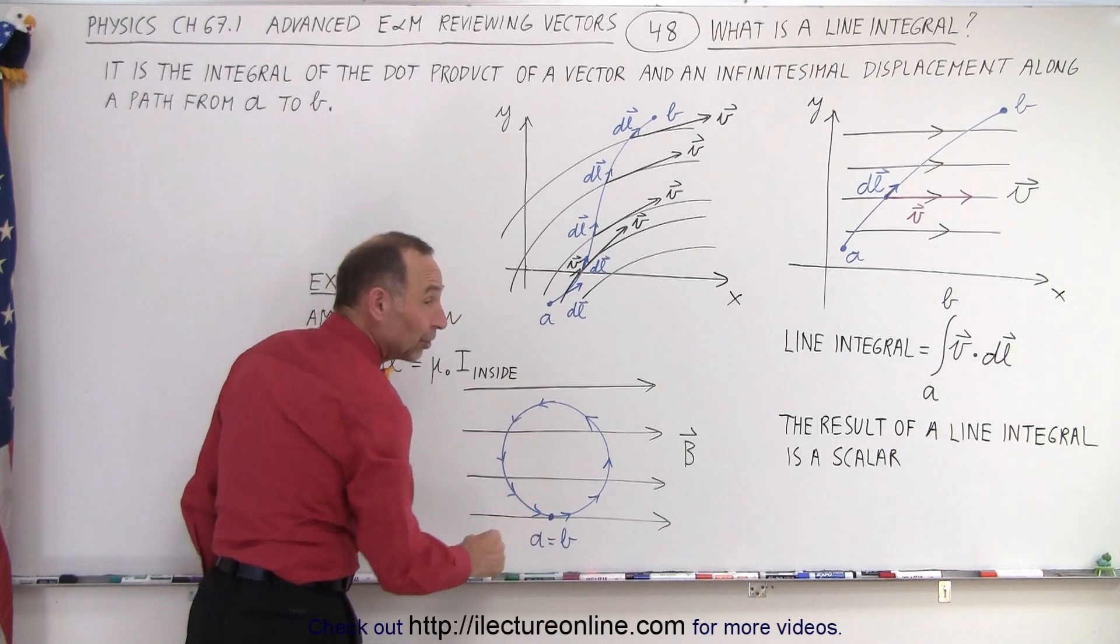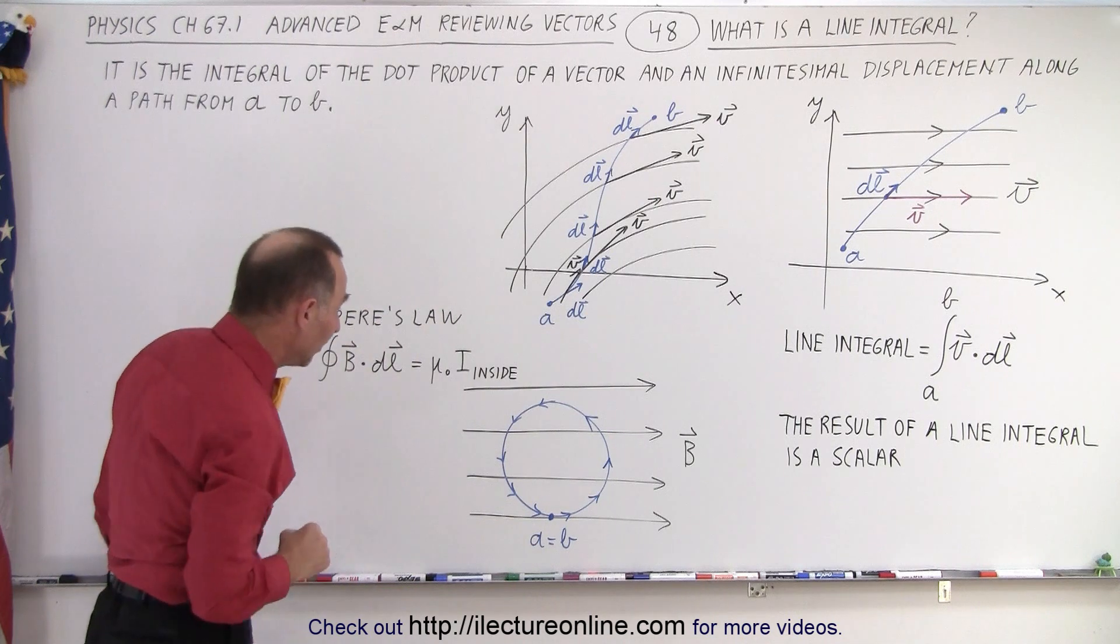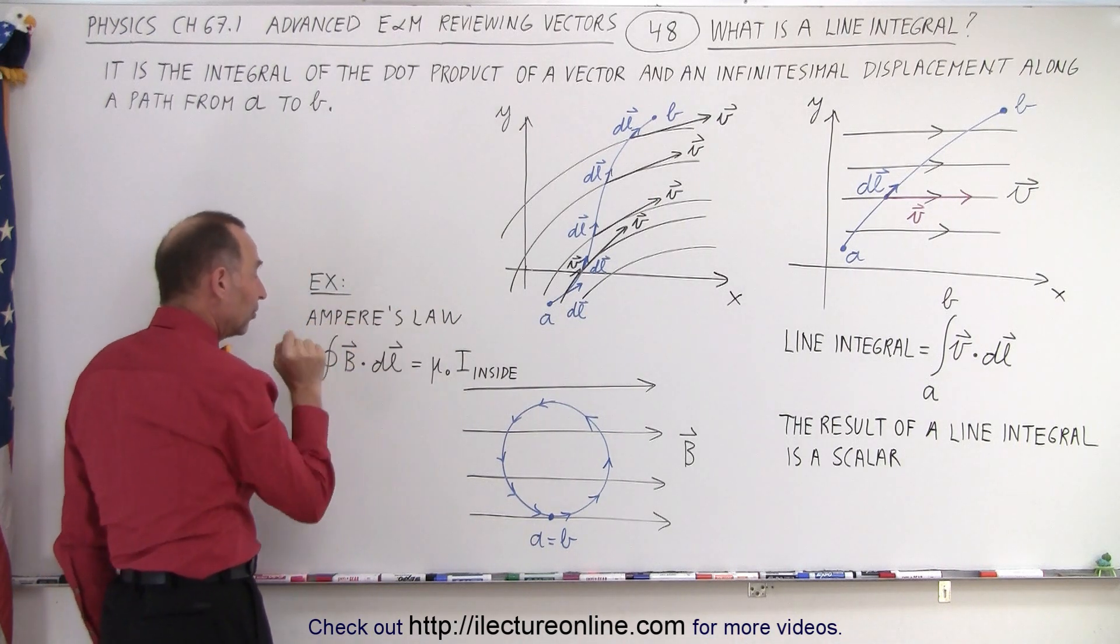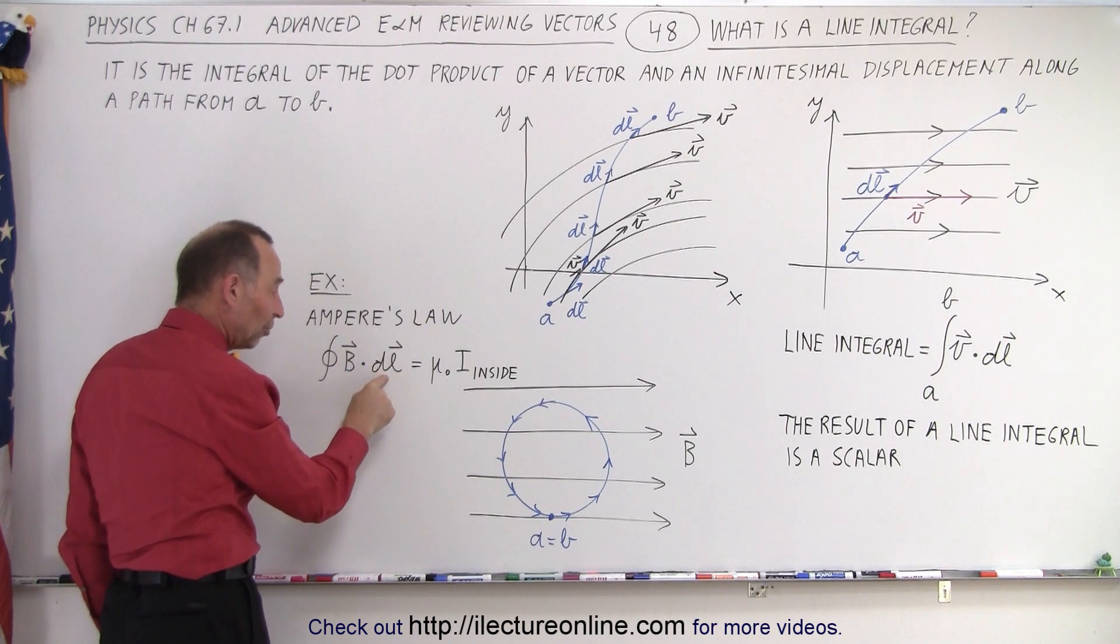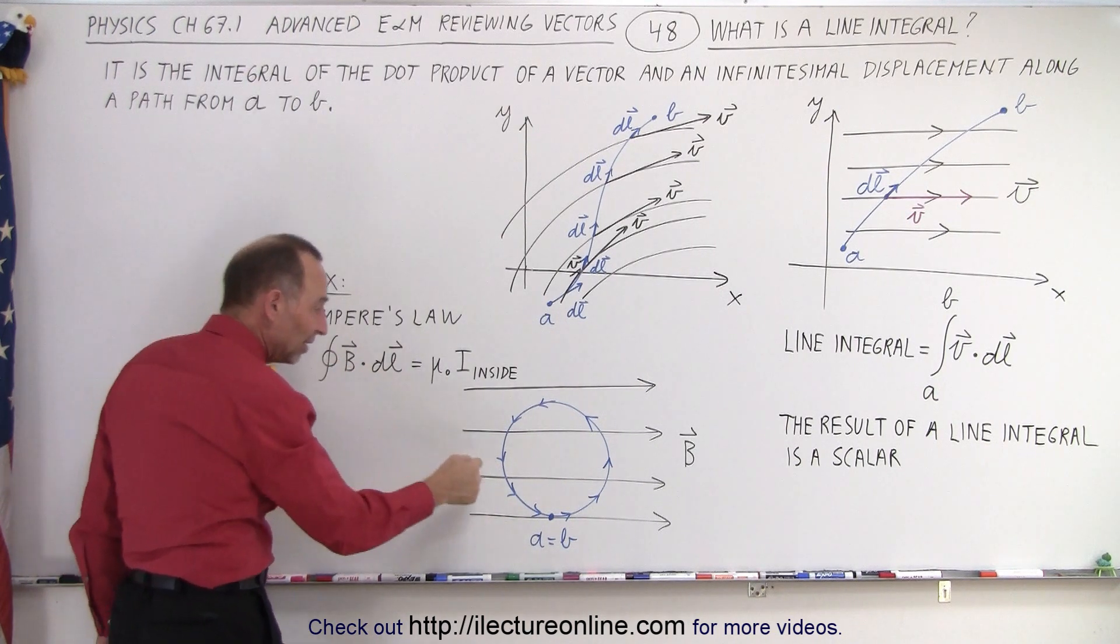So A and B are the same point, we simply travel around. And so Ampere's law tells us that the integral of the vector field B, the magnetic field, times the displacement, the little circle here means that we go all the way around the path.